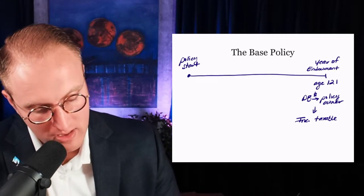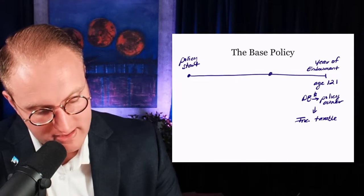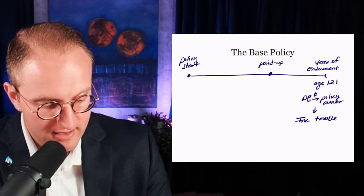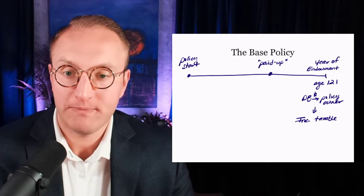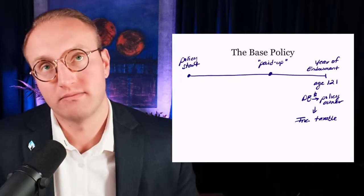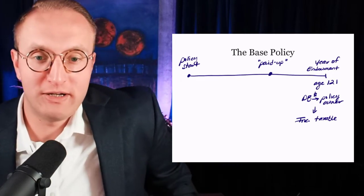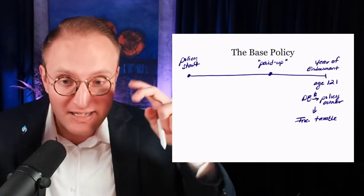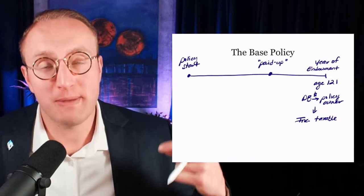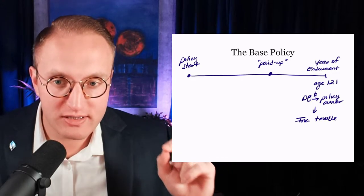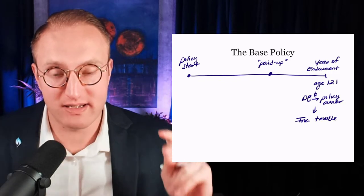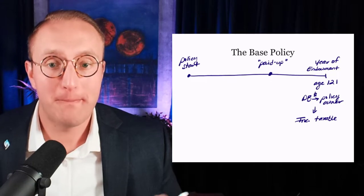Base premium is payable from day one until the initial death benefit is paid up. A policy is paid up when you've completed your schedule of base premium payments — when the initial death benefit is fully paid for.